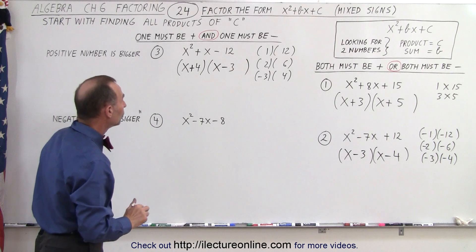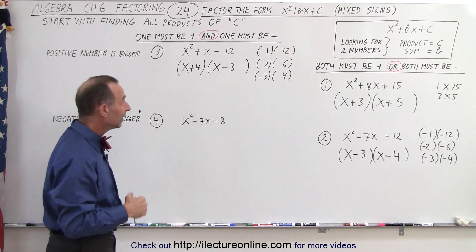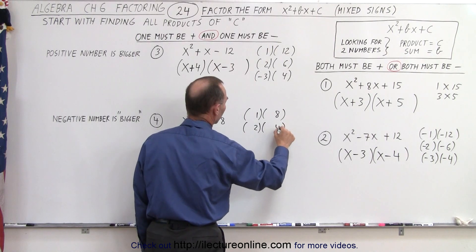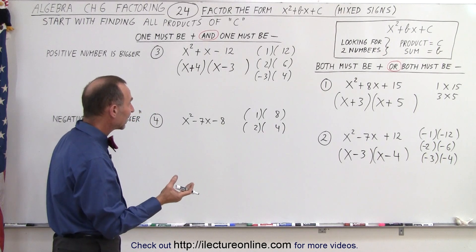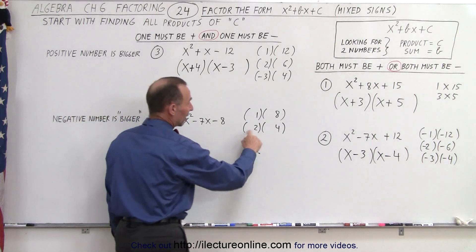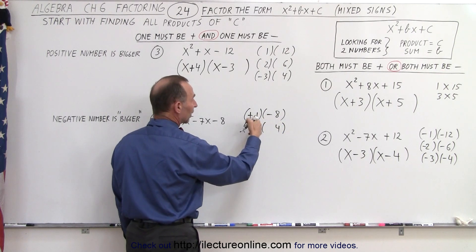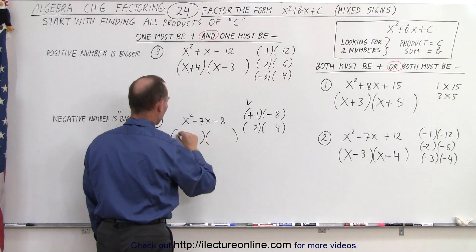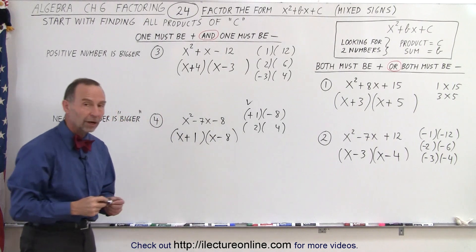And finally, my last example. Notice that one must be positive and one must be negative. When I add them together I get negative 7, which means the bigger one is the negative number. I can get 1 multiplied times 8, or 2 multiplied times 4 — those are the only two possibilities. The negative must be 7 more than the positive. The difference between those two is 7, so if I make this a negative 8 and a plus 1, I multiply them together to get negative 8, and add them to get negative 7. So I end up with x and x, a positive and a negative — the positive must be 1 and the negative must be 8. That's the factored form of that trinomial.